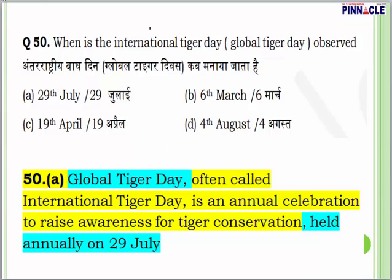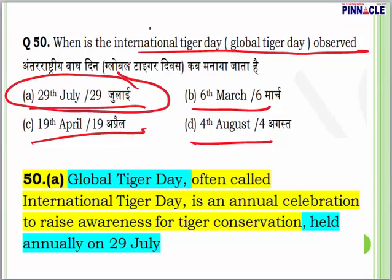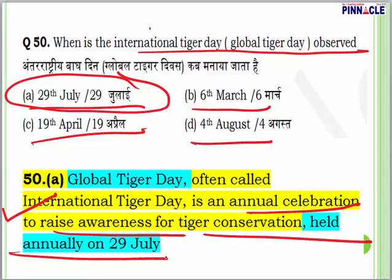Question 50: When is International Tiger Day or Global Tiger Day observed? Options are 29th July, 6th March, 19th April or 4th August. Global Tiger Day is an annual celebration to raise awareness for tiger conservation. It is held annually on 29th July. Answer is A — 29th July. That was the last question for paper code 885.